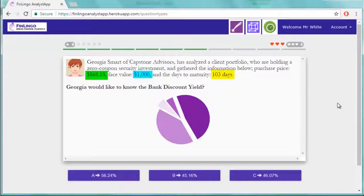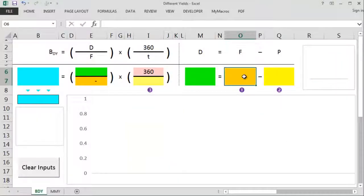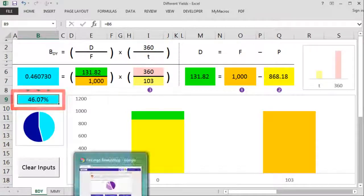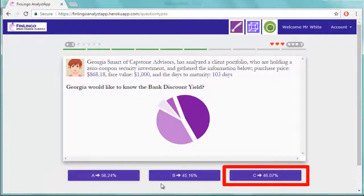Pick out the right numbers, and avoid getting the wrong ones put there deliberately. Slot them into the equation, and figure out a bank discount yield. Now check we got the result on finlingo. Choose it, then move on.